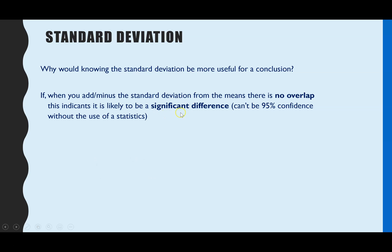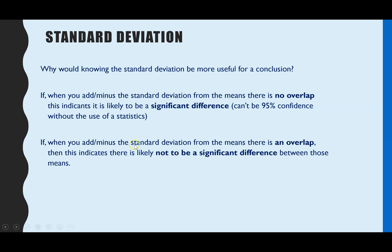Now you can use this phrase significant in AQA for standard deviation, but it's just key to make sure it indicates it's likely to be significant. It's not a full statistic, so it doesn't tell you that you can be 95% confident that it's significant, but it's likely to be significant. So that's the language you'd use. However, if when you add or minus a standard deviation from the mean there is an overlap, that indicates that there is likely not to be a significant difference. So an overlap means it's not significant. No overlap tells you it is a significant difference.